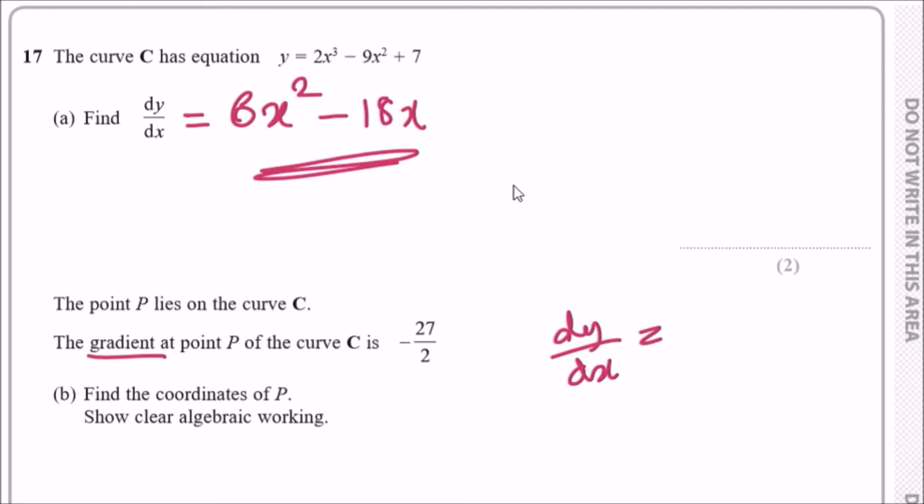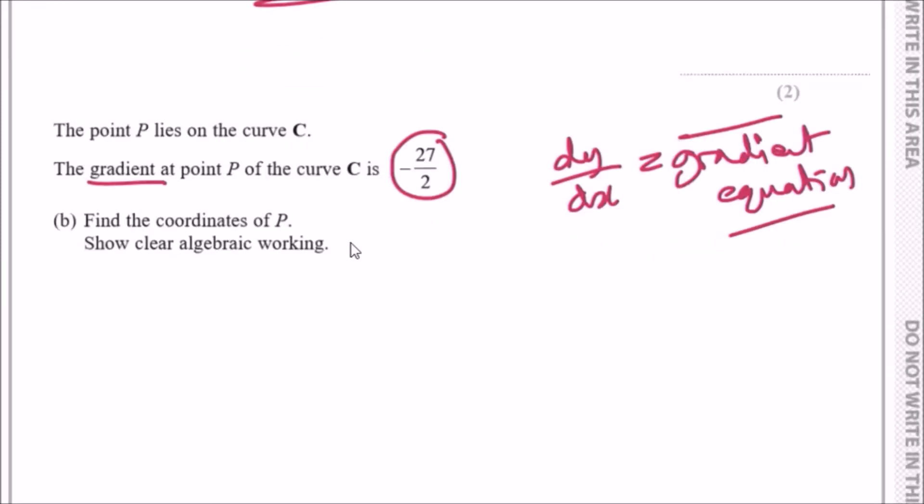Since they gave us a value at point P where the gradient was -27/2, this means dy/dx is equal to this value. So let's go ahead and do that right now. Using the value, dy/dx: 6x² - 18x equals -27/2.